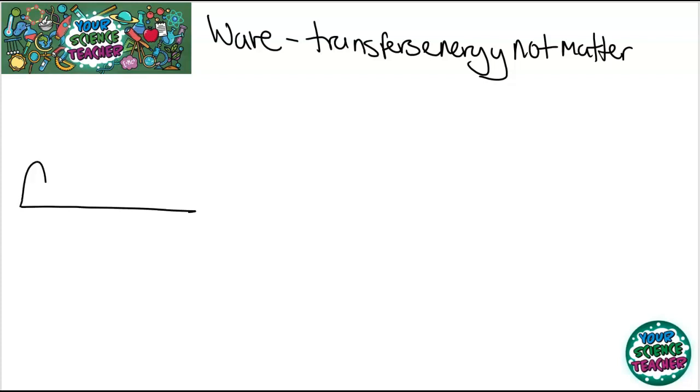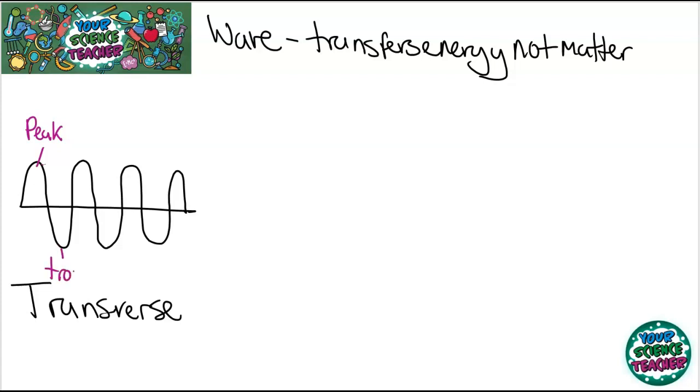The first type of wave we are going to look at is called transverse waves, and this is what a transverse wave looks like. Transverse waves have some key features. If I look at the top of my wave here, that is called my peak, and that's quite easy to remember. I just think it's like a peak of a mountain. The bottom of my wave is called a trough. Now the difference between two peaks or two troughs is known as the wavelength.